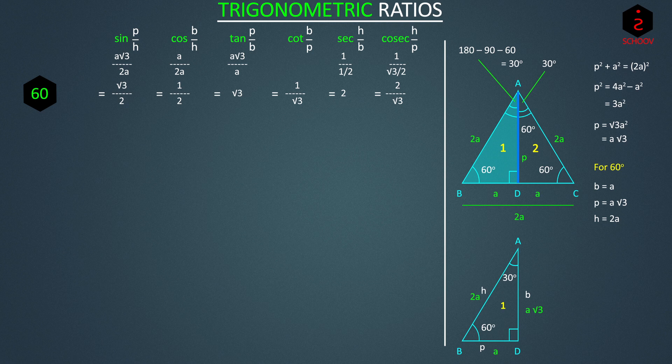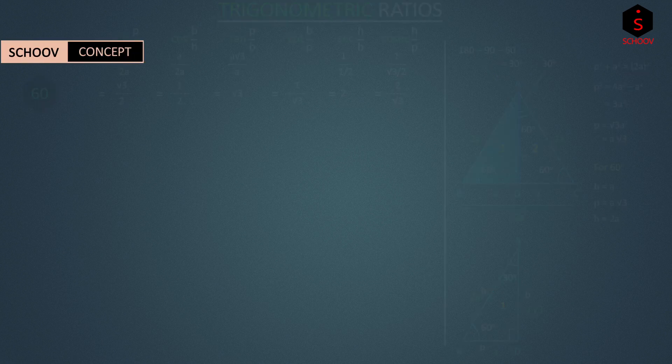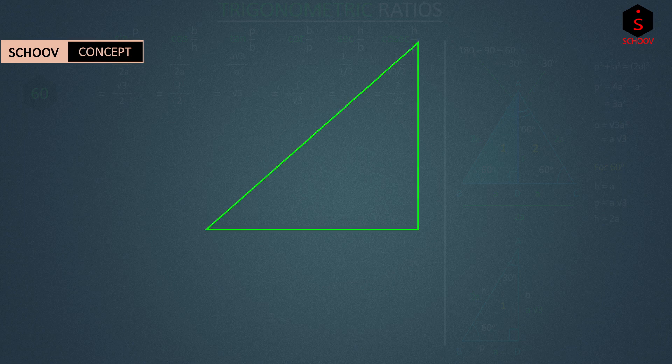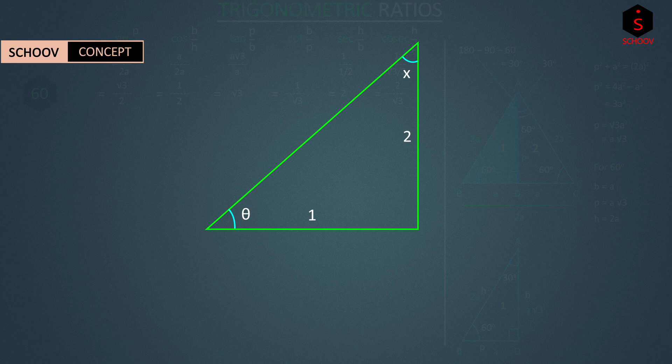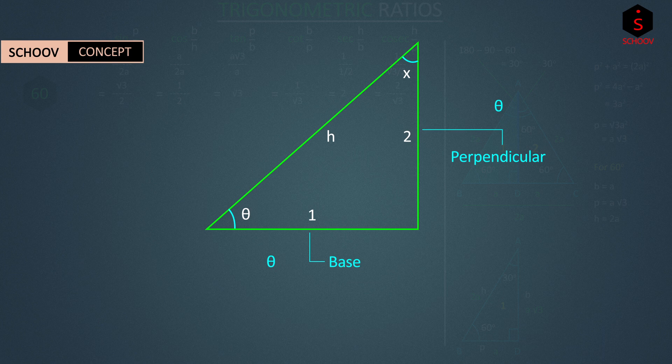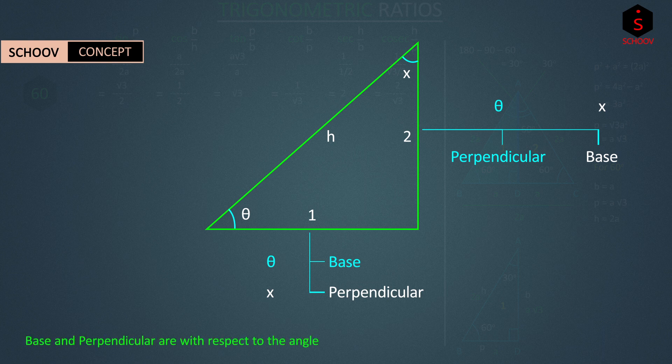Proceeding further, let us pause for a while to understand the concept of base and perpendicular. Let's take a right-angled triangle with one acute angle as theta and other one x. Let's name the perpendicular sides 1 and 2. Now, if we have to find trigonometric ratios for angle theta, this side 1 that makes this angle with the hypotenuse is the base, and side 2, which is opposite to it, becomes perpendicular. However, if we have to find sin cos for angle x, which is made by side 2, then 2 becomes base and 1 becomes perpendicular. So what is base and what is perpendicular actually depends on which angle we are talking about. So whenever we talk about base and perpendicular, we will always mention the angle under consideration.